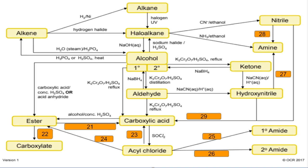Number twenty-one: ester to carboxylic acid — that's a hydrolysis reaction, and to get the carboxylic acid you'd use dilute acid and heat it. Number twenty-two: another hydrolysis reaction — but this time to get the carboxylate salt you would use aqueous hydroxide ions and again you would need to heat it. Twenty-three: acyl chloride to carboxylic acid — react it with water. Twenty-four: acyl chloride to ester — react with an alcohol.